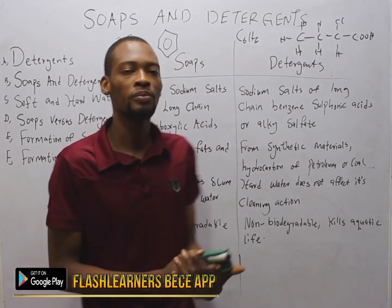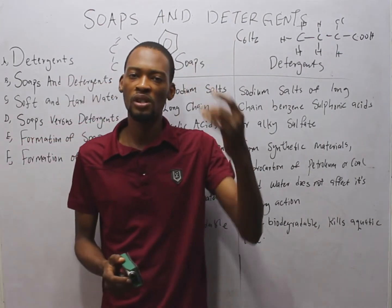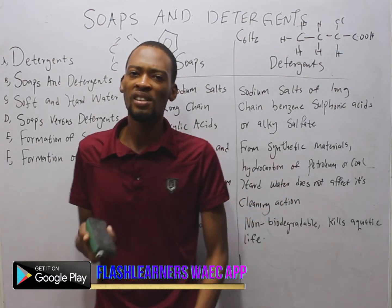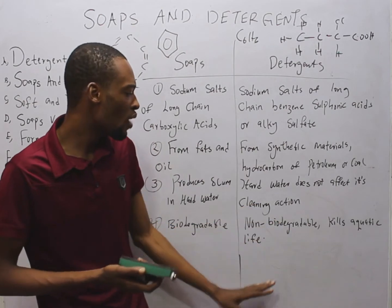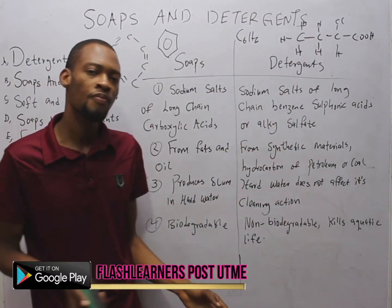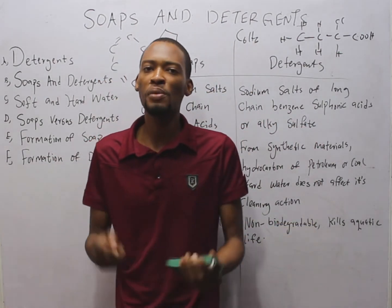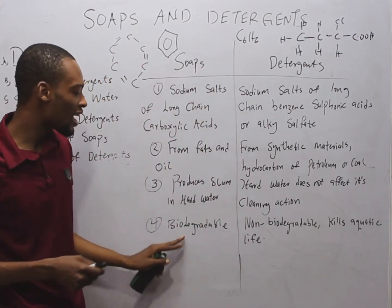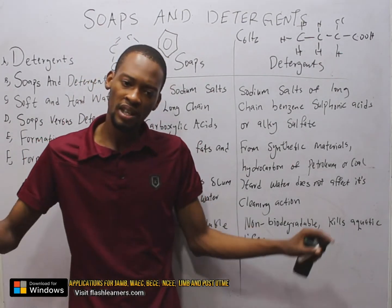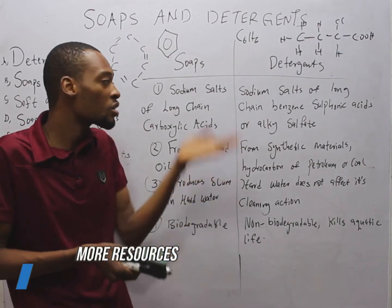Soaps produce scum or precipitate in hard water, so soaps are not effective in hard water — soap will just waste. Meanwhile, hard water does not affect the cleaning action of detergents at all, because detergents react with the calcium in hard water to form soluble compounds. Soaps are biodegradable — they can be broken down by bacteria and other actions — which means soaps don't cause pollution. So we have an advantage of soap over detergents: it doesn't cause pollution.